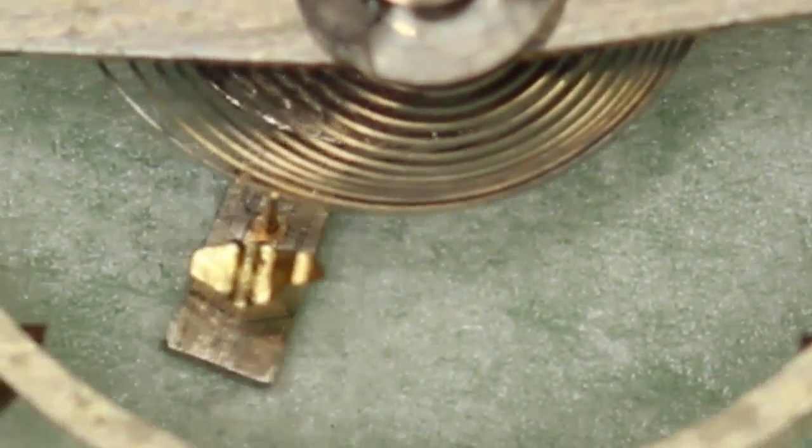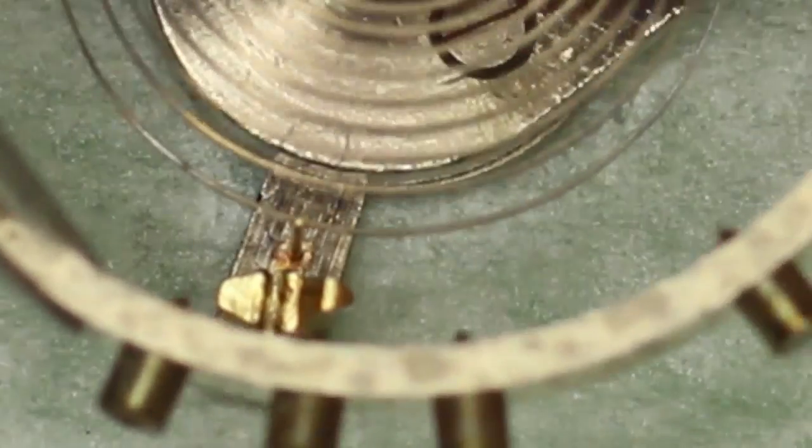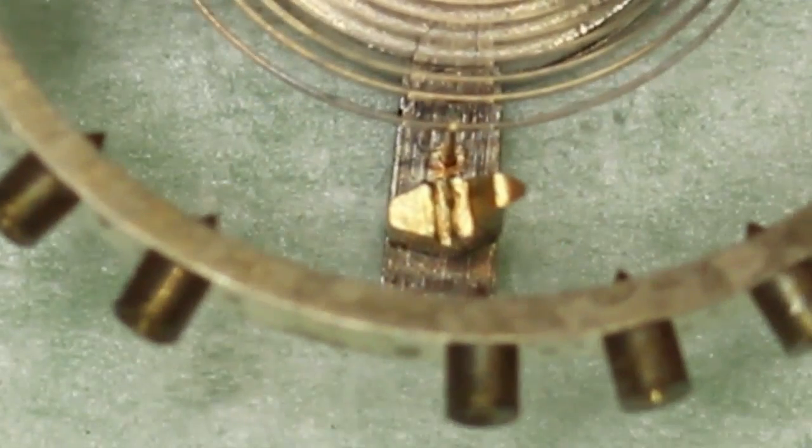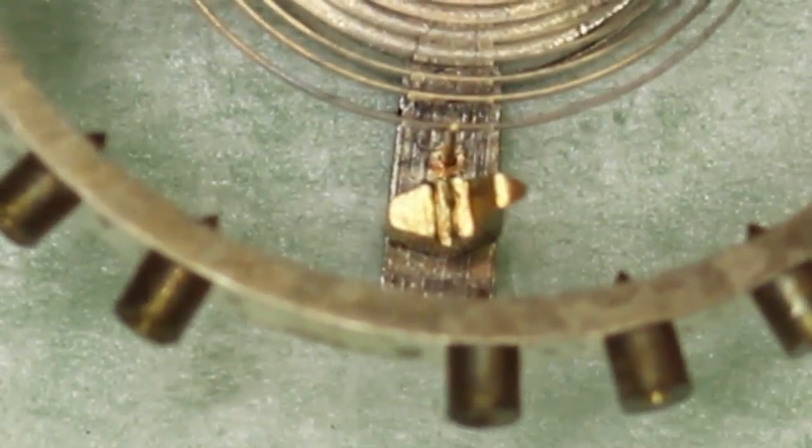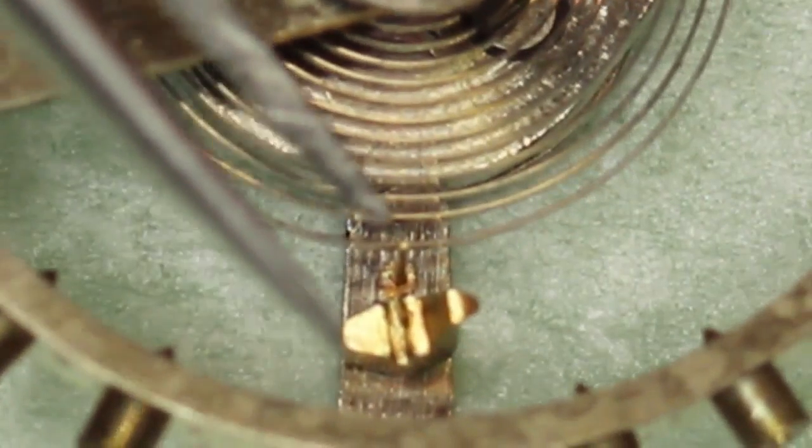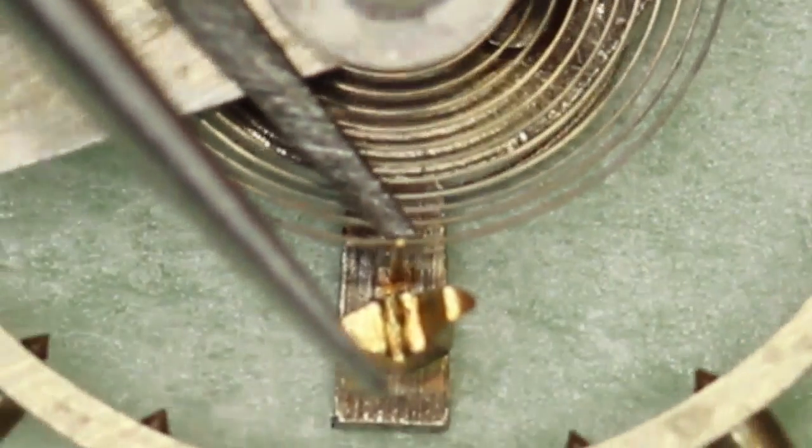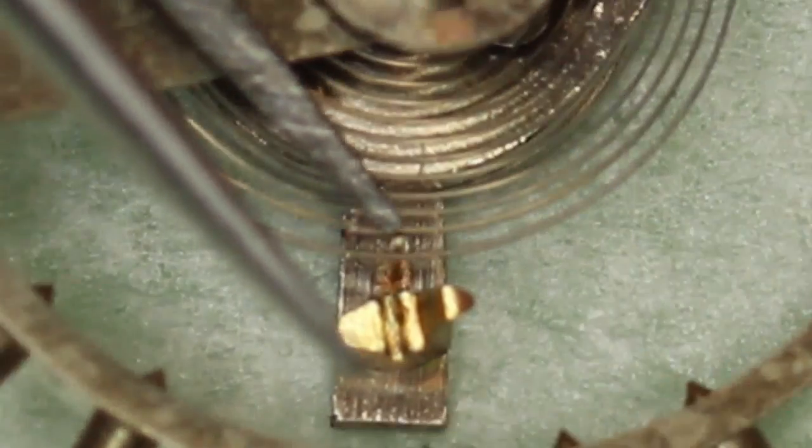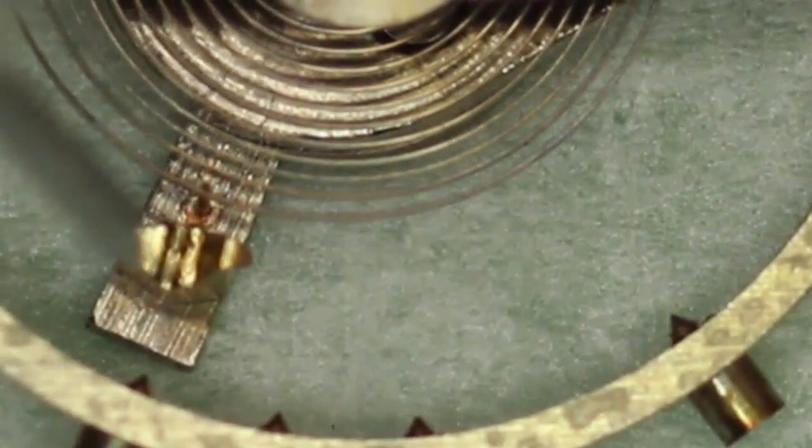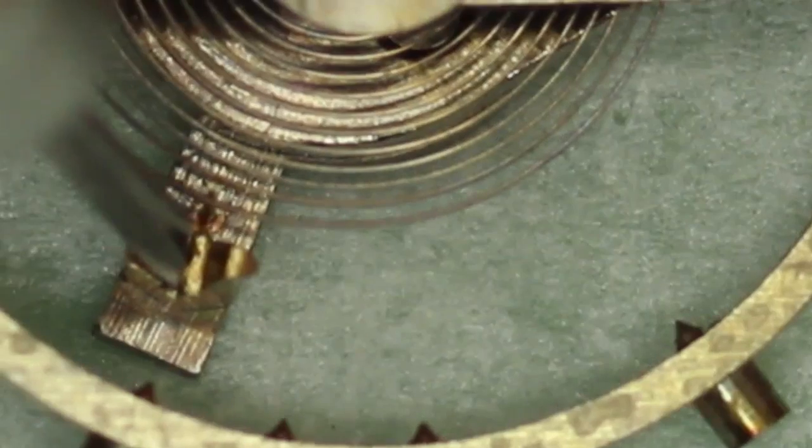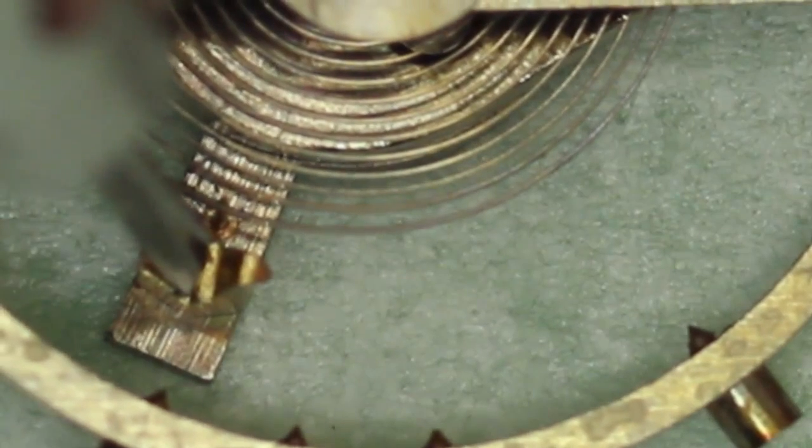And now this is why you have to have the index as far across as possible, because you want to be lifting the hairspring over. And that is easier to do without damaging the spring when the index is as far away from the stud as possible. And now that's lifted over, I can continue the assembly.